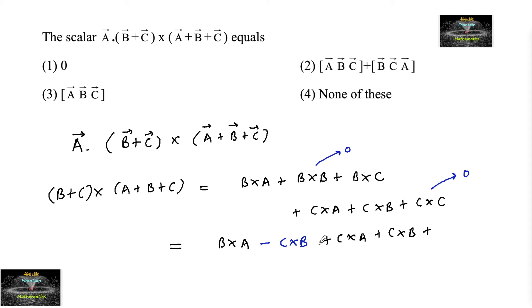Now we can cancel C cross B and C cross B, plus minus. So we have B cross A plus C cross A.